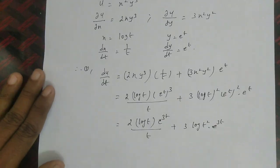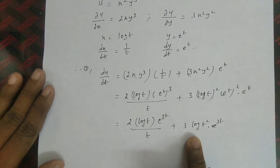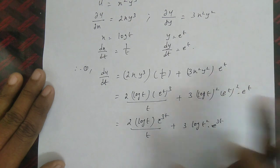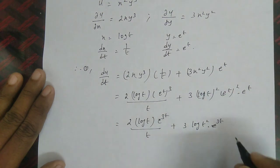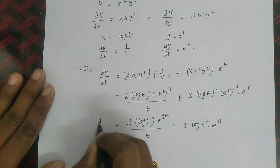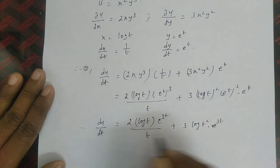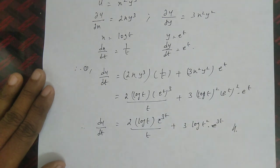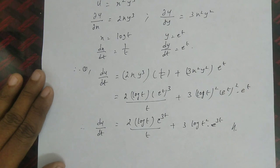Therefore, the final answer is du/dt = (2 log t · e³ᵗ)/t + 3(log t)² · e³ᵗ.